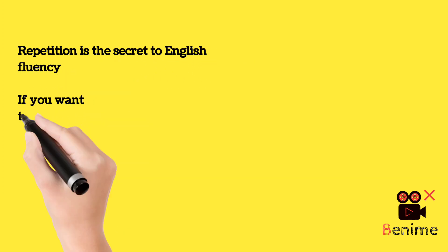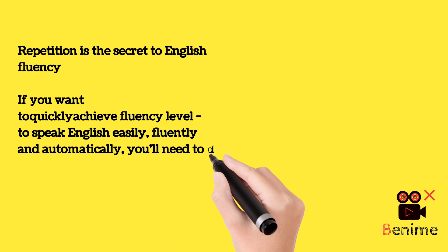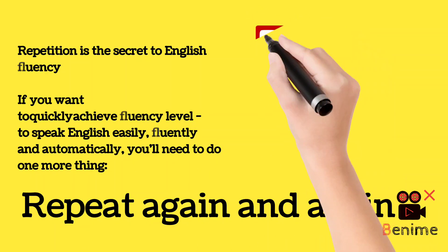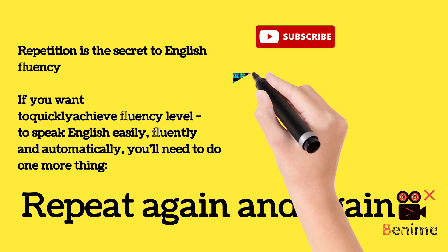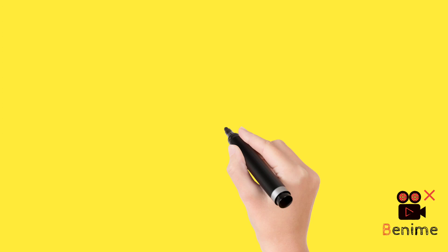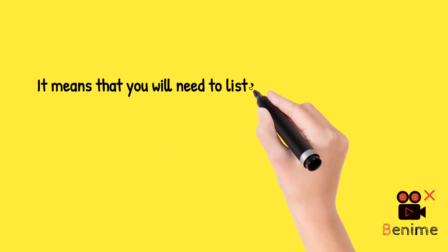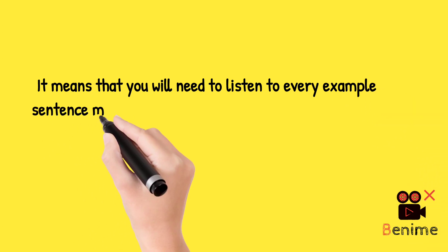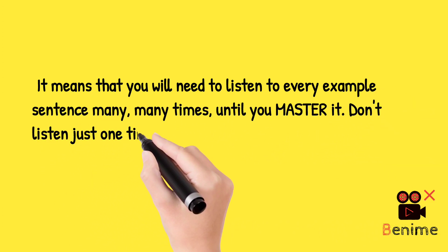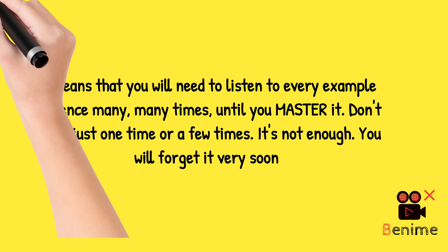Repetition is the secret to English fluency. If you want to quickly achieve fluency, to speak English easily, fluently, and automatically, you'll need to do one more thing: repeat again and again. You need to listen to every example sentence many, many times until you master it. Don't listen just once or a few times — it's not enough. You will forget it very soon.